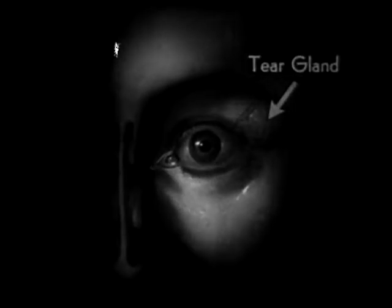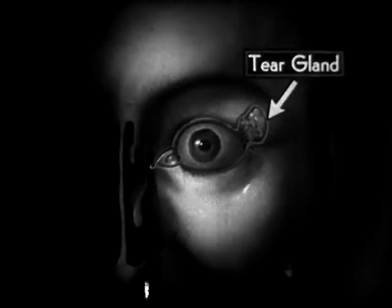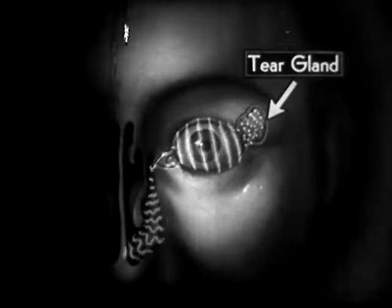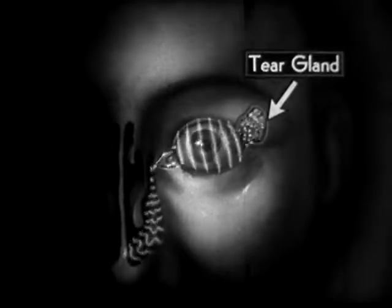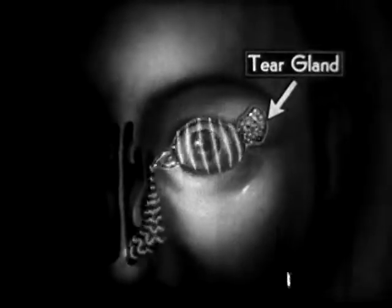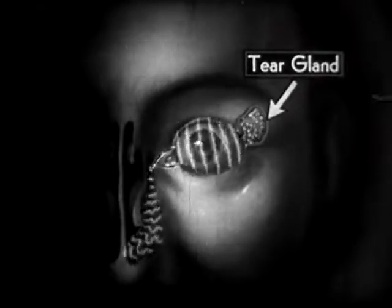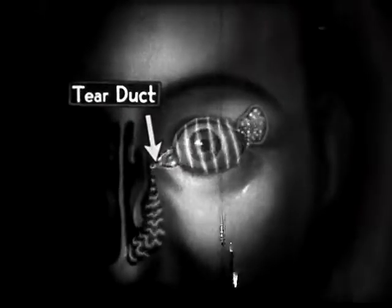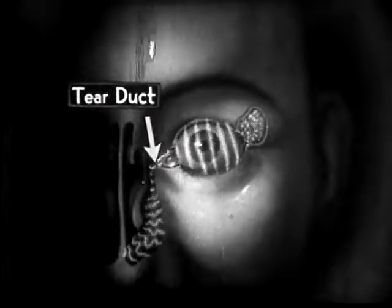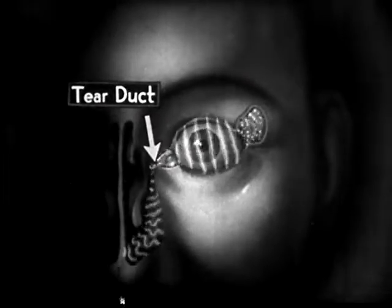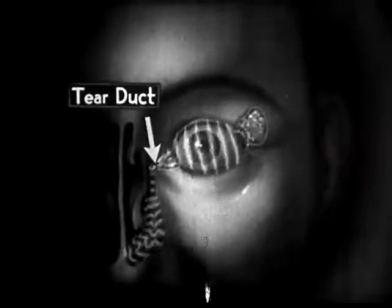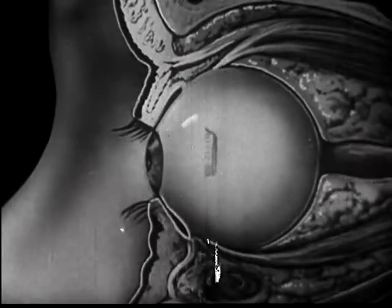Another important safeguard to the eye is the tear gland, which secretes the tear fluid. This is an effective germicide which drains through the tear ducts into the nose after flushing and cleaning the entire eye surface. The eyeball itself has a white glistening surface; its front part bulges and forms a highly transparent window.